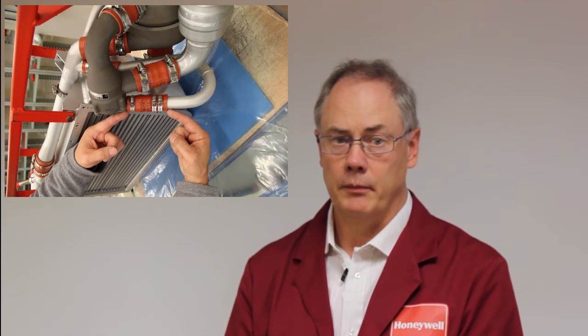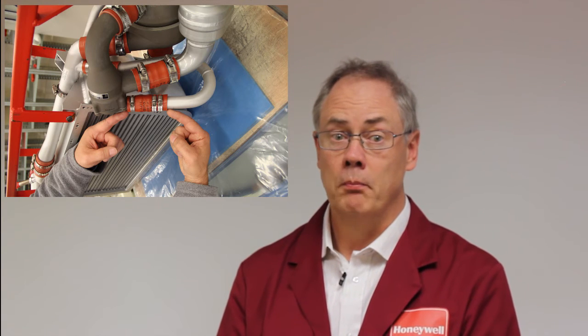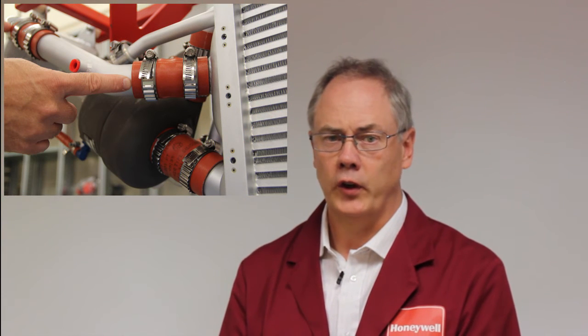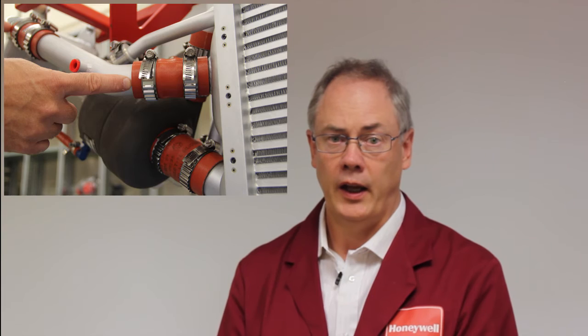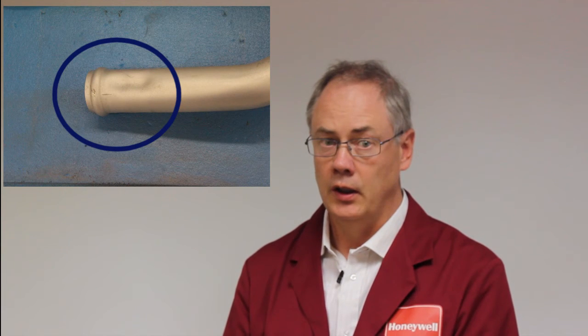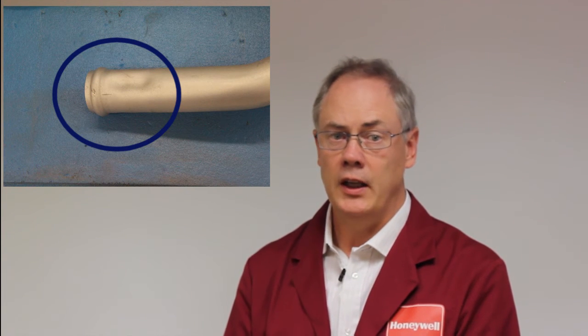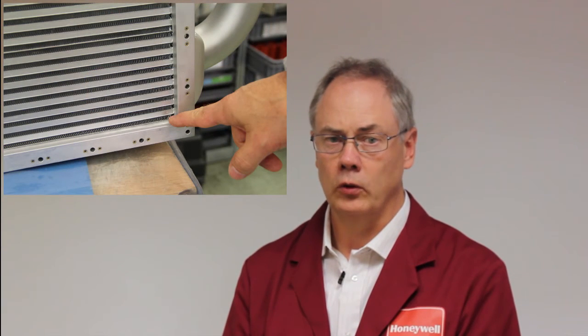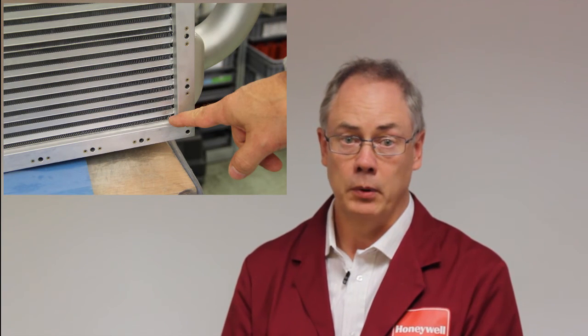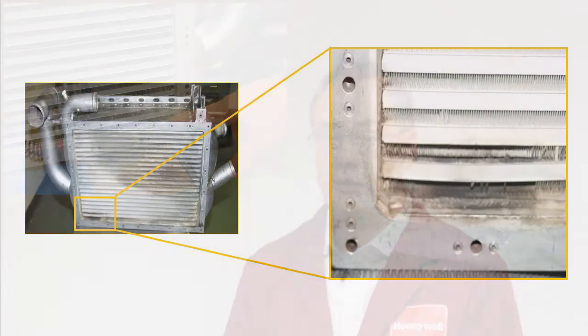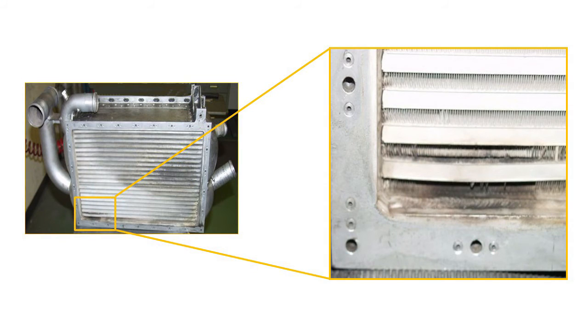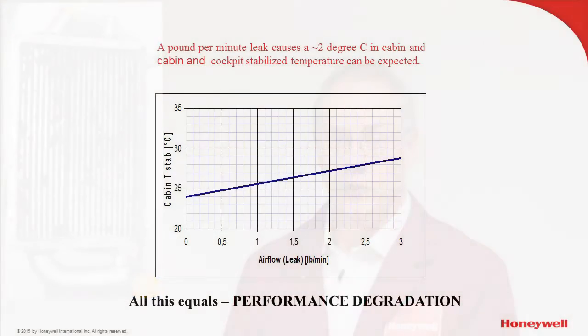System leakage recap: System leakage is most common from the hoses, ducts and from the heat exchanger. Leakage will divert air from the ACM turbine and reduce its rotational speed, degrading ECS efficiency. Even a small leakage may result in noticeable differences in stabilised cabin temperatures. ACM icing conditions may also occur and increase the probability of turbine FOD, reducing efficiency and reliability of the ACM.